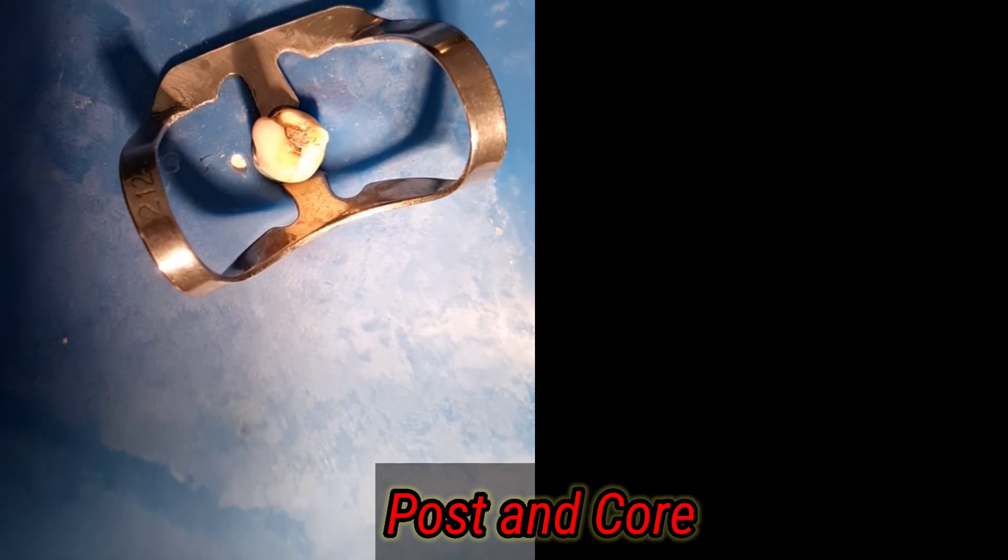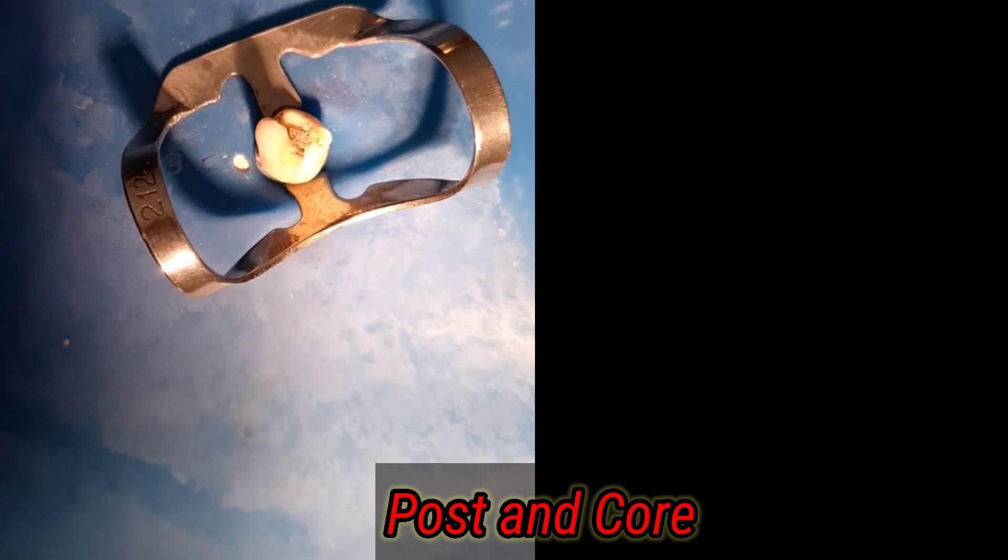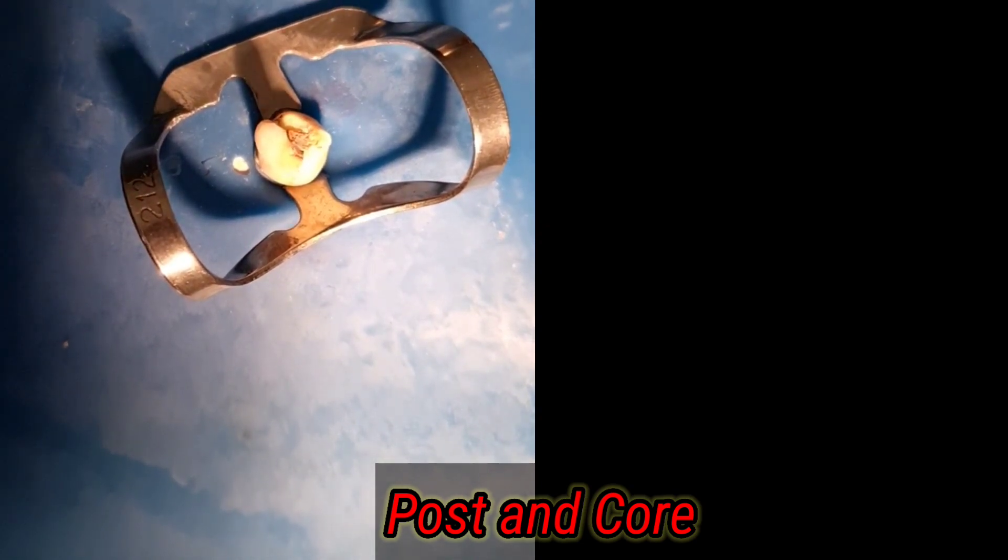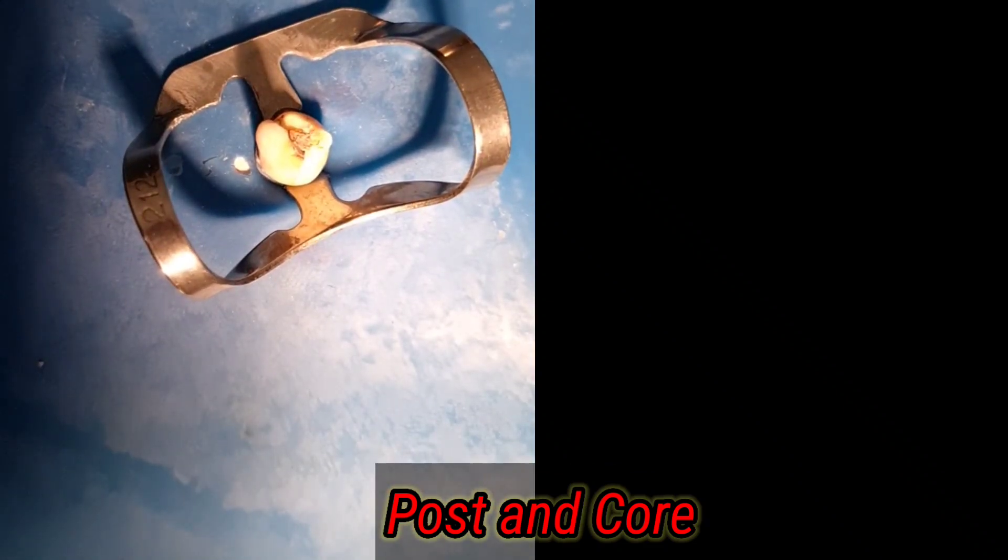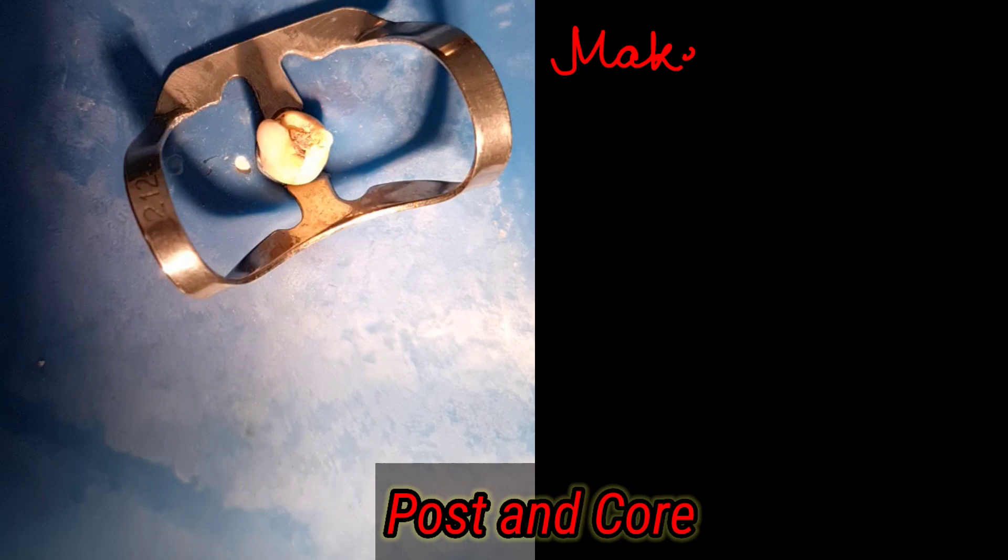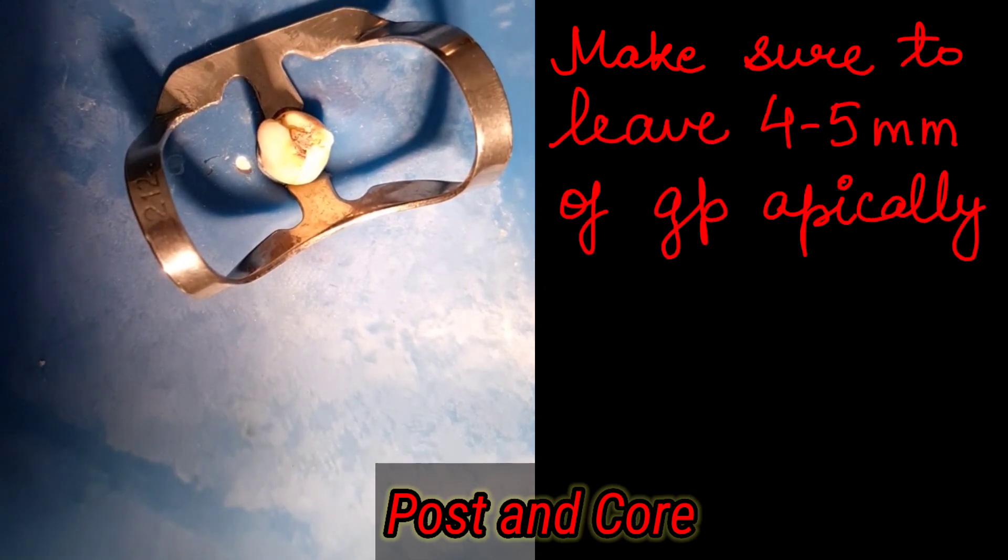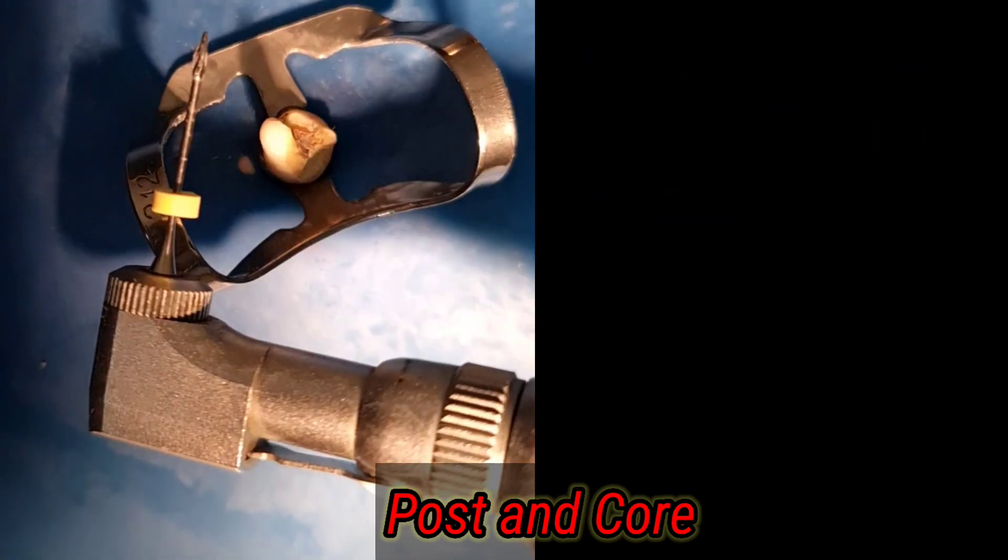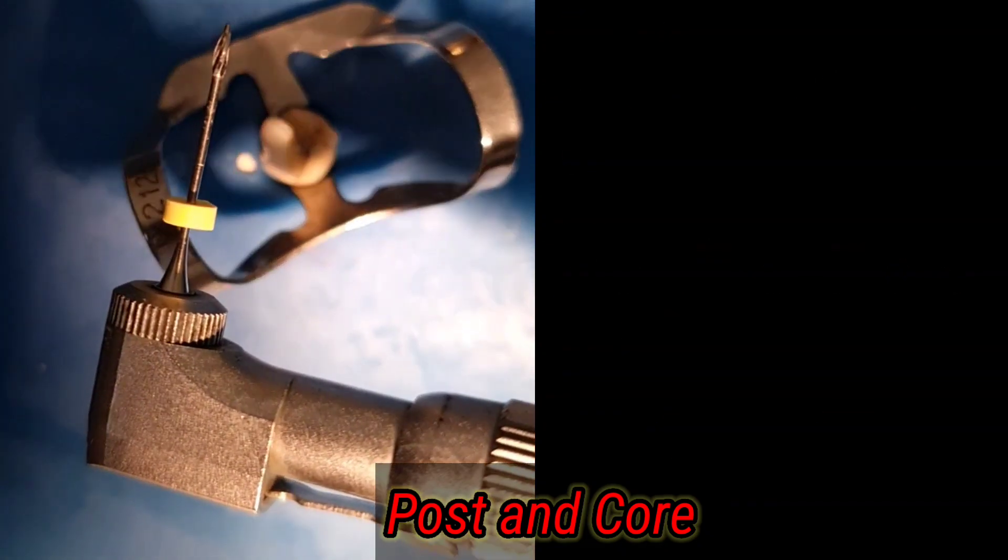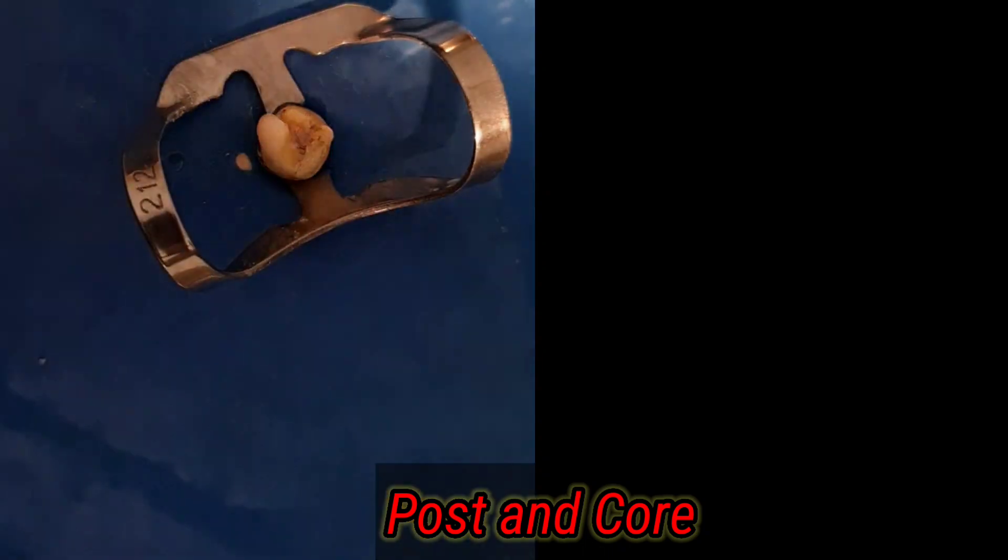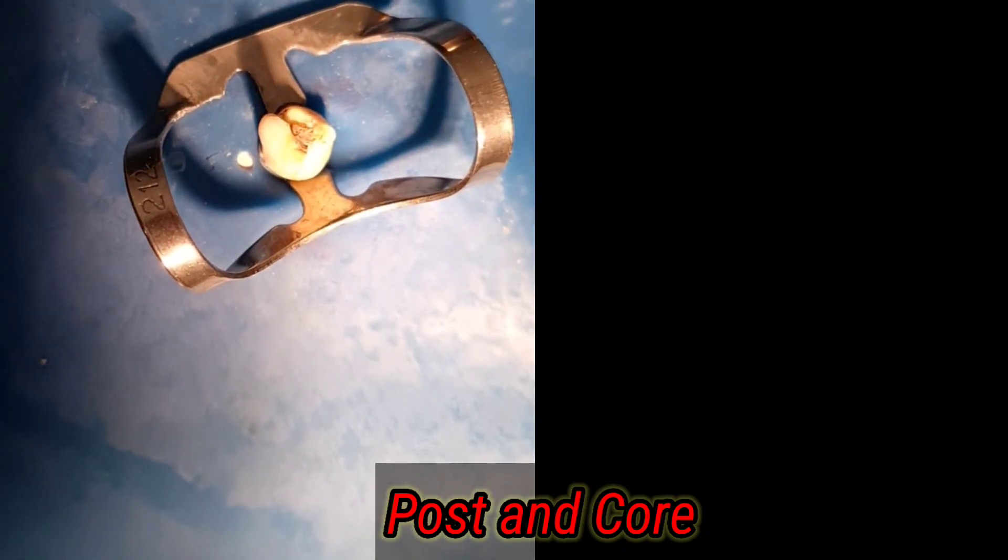When preparing for a post, select the widest root canal in case you are taking a multi-rooted tooth and take care to not over-prepare or enlarge the canal. Make sure that you leave at least four to five millimeters of gutta-percha apically as the apical barrier and ensure the post preparation diameter is smaller than one-third of the root diameter.